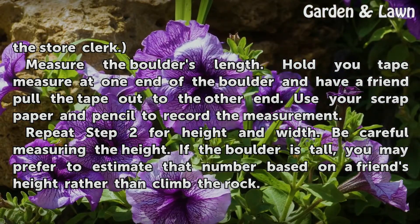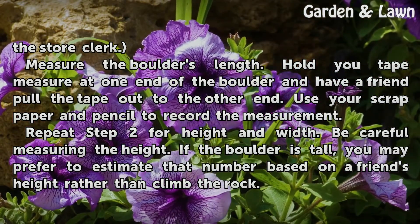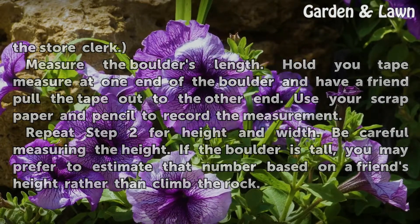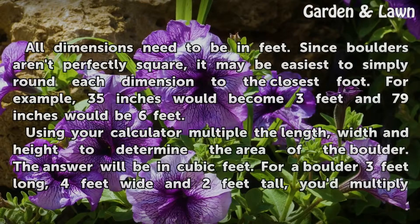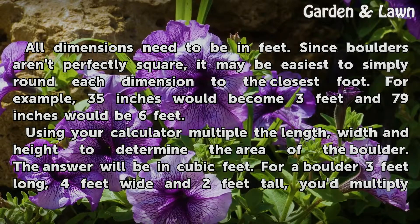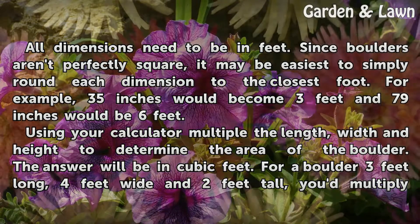Repeat this step for height and width. Be careful measuring the height — if the boulder is tall, you may prefer to estimate that number based on a friend's height rather than climb the rock. All dimensions need to be in feet. Since boulders aren't perfectly square, it may be easiest to round each dimension to the closest foot. For example, 35 inches would become 3 feet and 79 inches would be 6 feet.